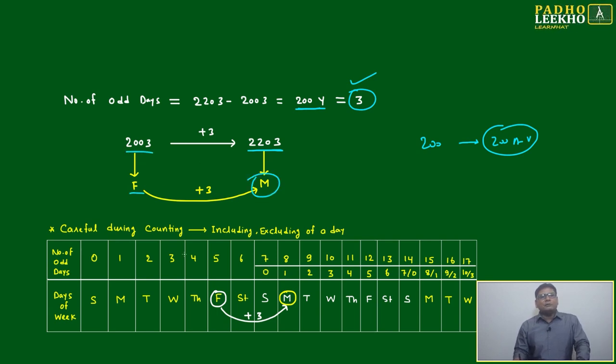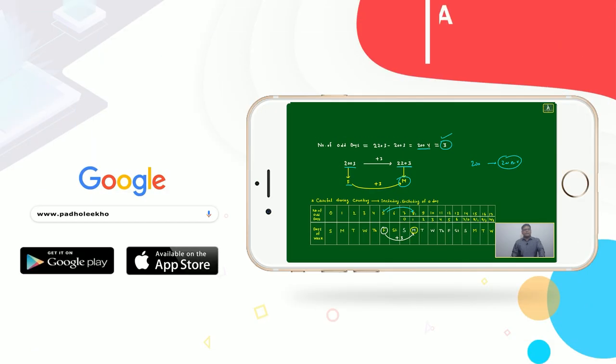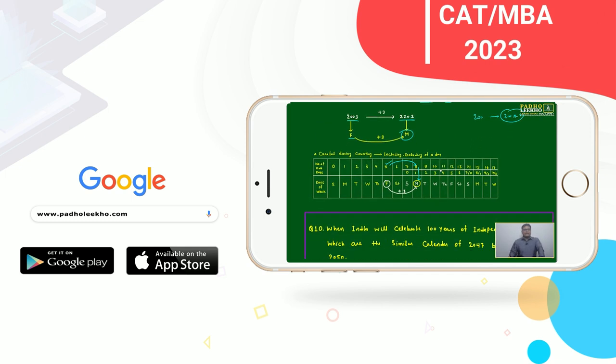Plus three, if you are adding it will become Monday. Friday meaning is five, you add five plus three, it will become eight. Eight means Monday, means 2203 when India will celebrate Independence Day, that date will be Monday.